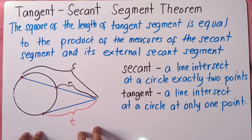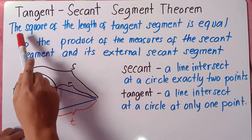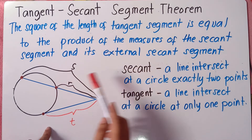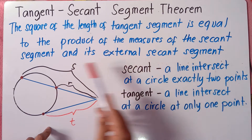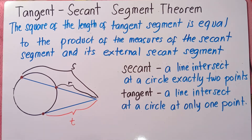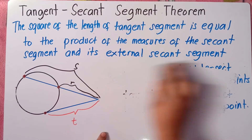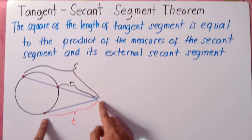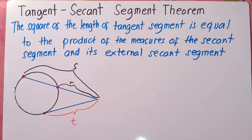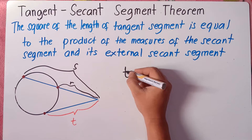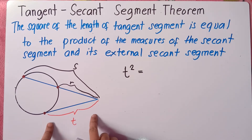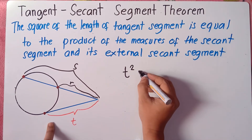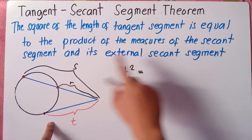Now it says in the theorem: if there are given numbers, you can solve using this theorem. The square of the length of the tangent segment is equal to the product of the measures of the secant segment and its external segment. So the variable for tangent is t, and the equation is: t squared is equal to the product of the secant segment.